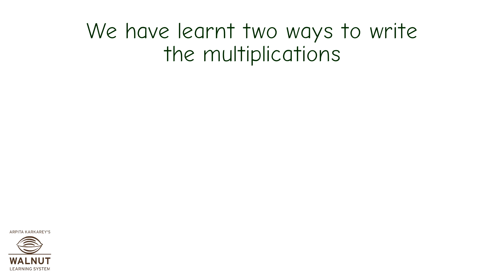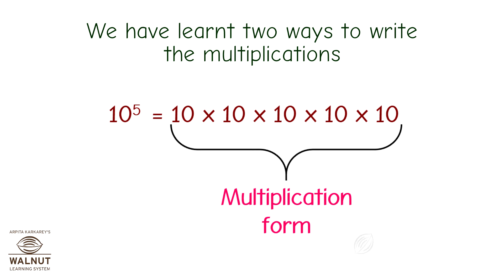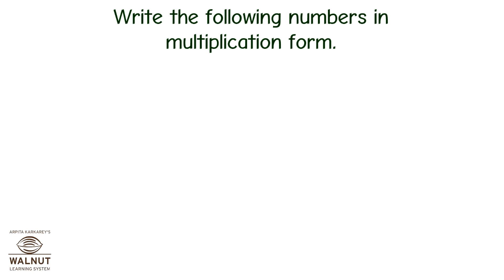We have learnt two ways to write the multiplication. 10 raised to 5 is equal to 10 multiplied by 10 multiplied by 10 multiplied by 10 multiplied by 10. The right-hand side of the equal sign is called the multiplication form, because we have written it as multiplication. The left-hand side is called the exponential form or the index form. Remember: the index tells us how many times to multiply the base — if the index is 2, multiply the base 2 times; if 8, multiply 8 times; if 10, multiply 10 times.